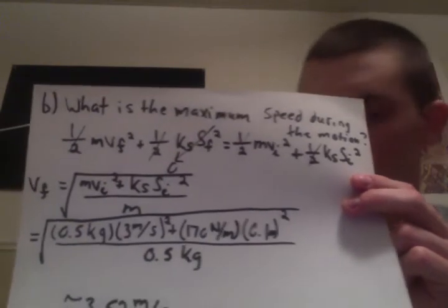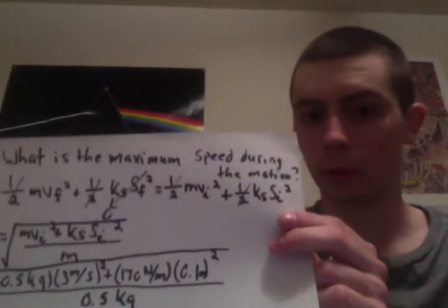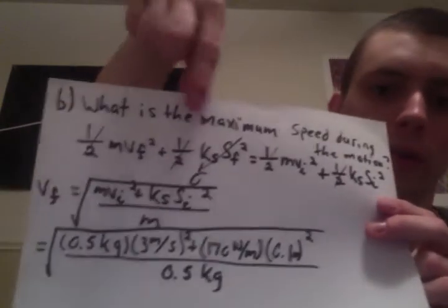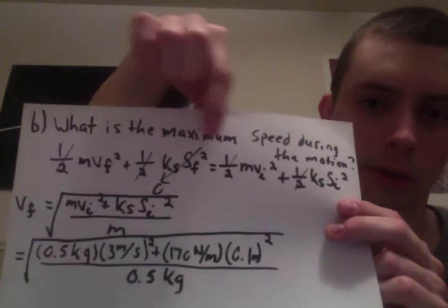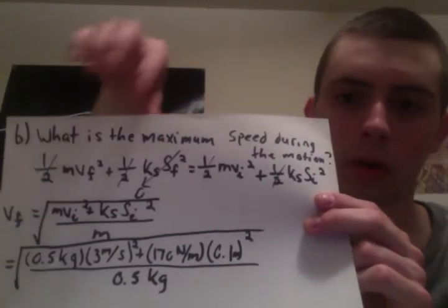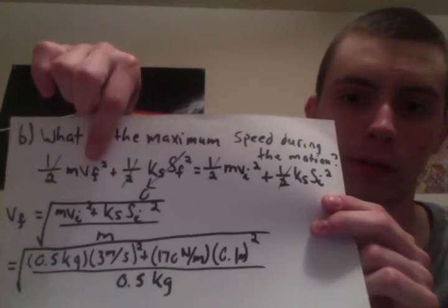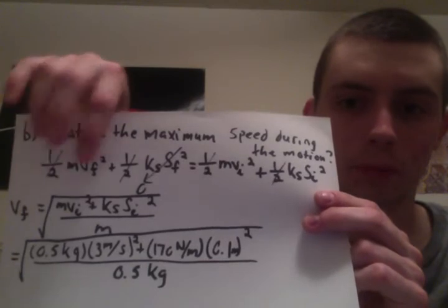During the maximum speed, we're going to have a final potential spring energy of zero, so that's why this right here is going to zero and we can disregard it. Again, all the one-halves cancel out algebraically.